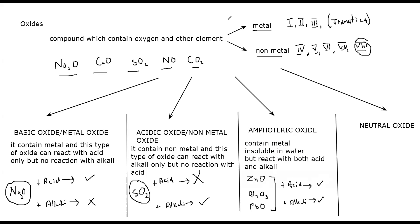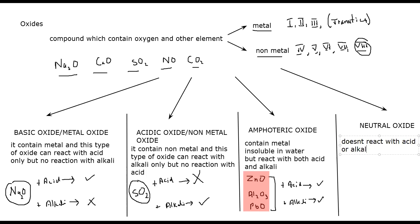So there are more amphoteric oxides, but in your course outline you should learn three of them: zinc, aluminium, and lead. And there is a last type of oxide which does not react with acid or alkali — no reaction with acid or alkali — and this type of oxide is known as a neutral oxide.